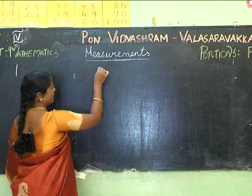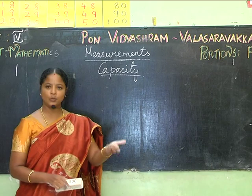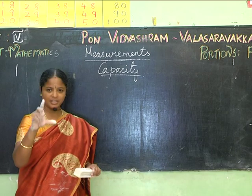Coming to capacity: unlike solids, we are unable to measure liquids with a weighing machine. So we use measuring jars and other instruments to measure liquids.